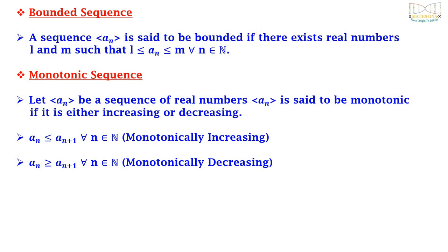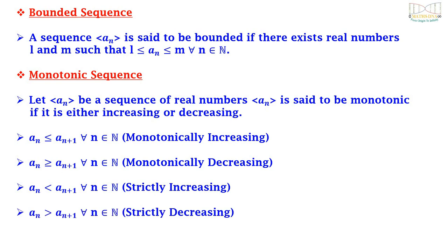If a_n < a_{n+1} for all n belonging to N, then it is a strictly increasing sequence. And if a_n > a_{n+1} for all n belonging to N, then it is a strictly decreasing sequence.